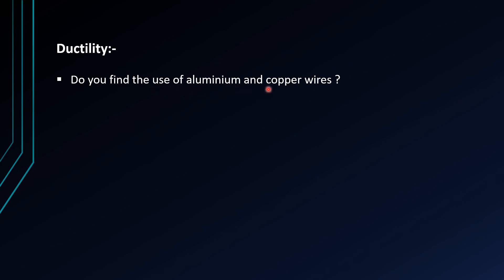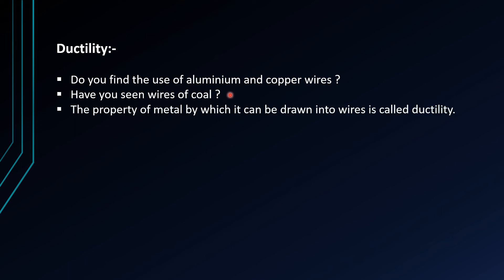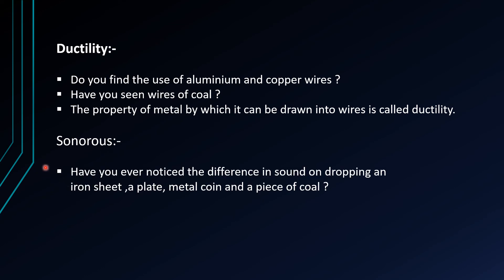Do you find the use of aluminium and copper wires? We use them in electricity because aluminium and copper are good conductors of electricity — they easily pass electricity. Have you seen wires made of coal? No, because coal is a non-metal and a bad conductor of electricity; it is an insulator. So we do not make wires from coal. The property of metal by which it can be drawn into wire is called ductility.